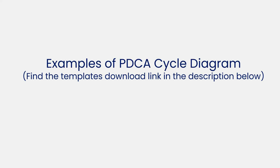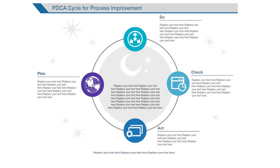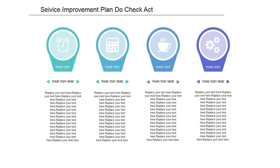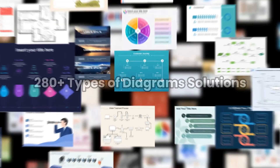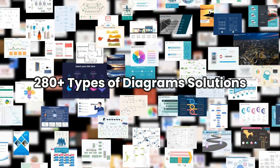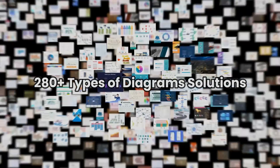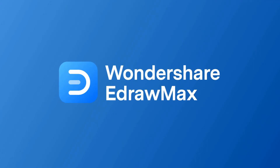Now let's see more examples of PDCA cycle diagrams. Here's a Process Improvement PDCA cycle. This is a Service Improvement PDCA cycle. And this is a Business Continuity PDCA cycle. Thanks for watching and don't forget to subscribe to our channel for more eDraw Max videos. Please find the link in the description below to try eDraw Max online or to download the software. Bye.